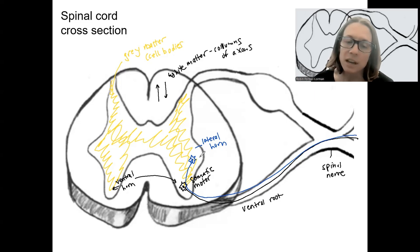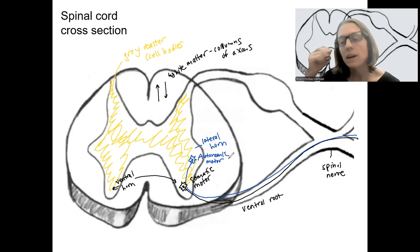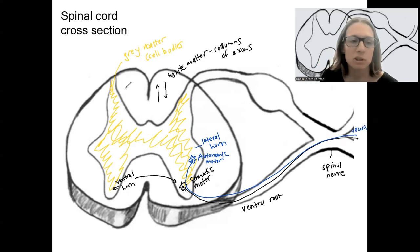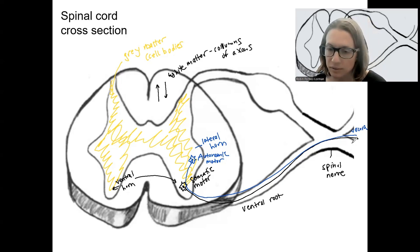But this contains or carries autonomic motor information. So that's going to contact the viscera instead of skeletal muscles, which is what somatic motor is controlling. Way off in the periphery.